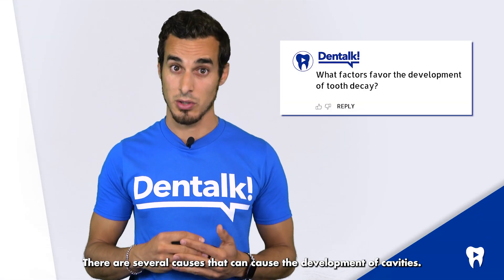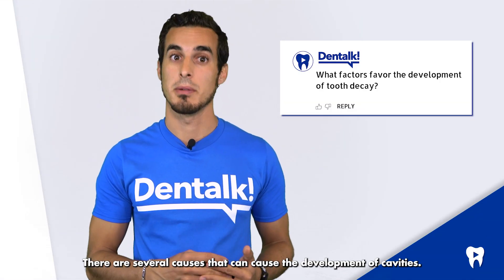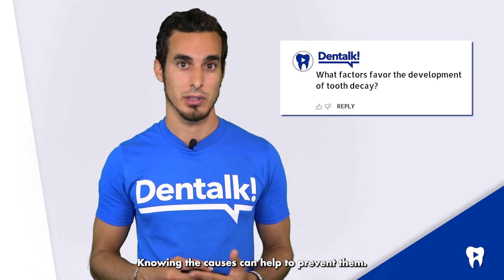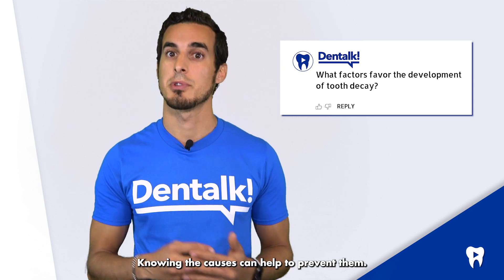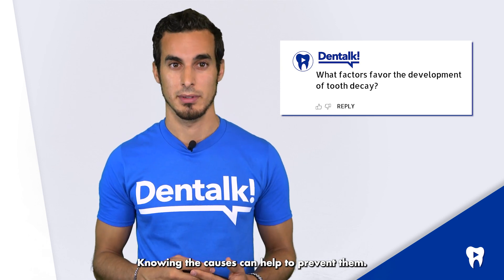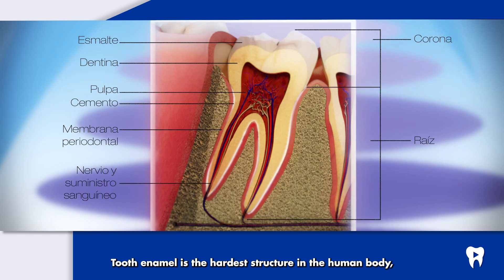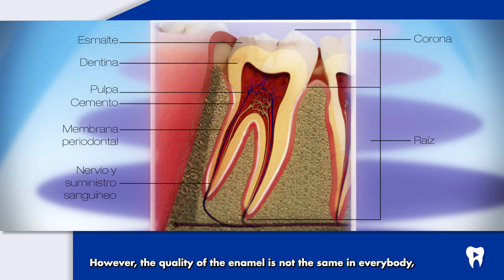There are several causes for the development of cavities. Knowing the causes can help to prevent them. Tooth enamel is the hardest structure in the human body, even more than bone. However, the quality of the enamel is not the same in everybody, so the genetics of each individual will determine the resistance to caries attack.